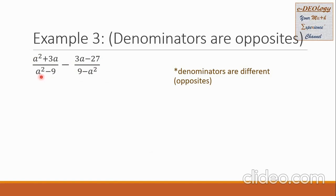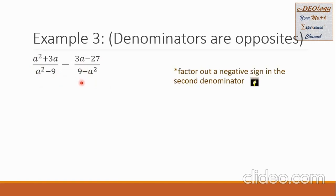Look at the a squared here — it is positive. There is an a squared in the other denominator but it is negative. On the other hand, the negative 9 constant in the first denominator has a corresponding positive 9 in the second denominator. In this case, what we will do is factor out a negative sign from the second denominator.